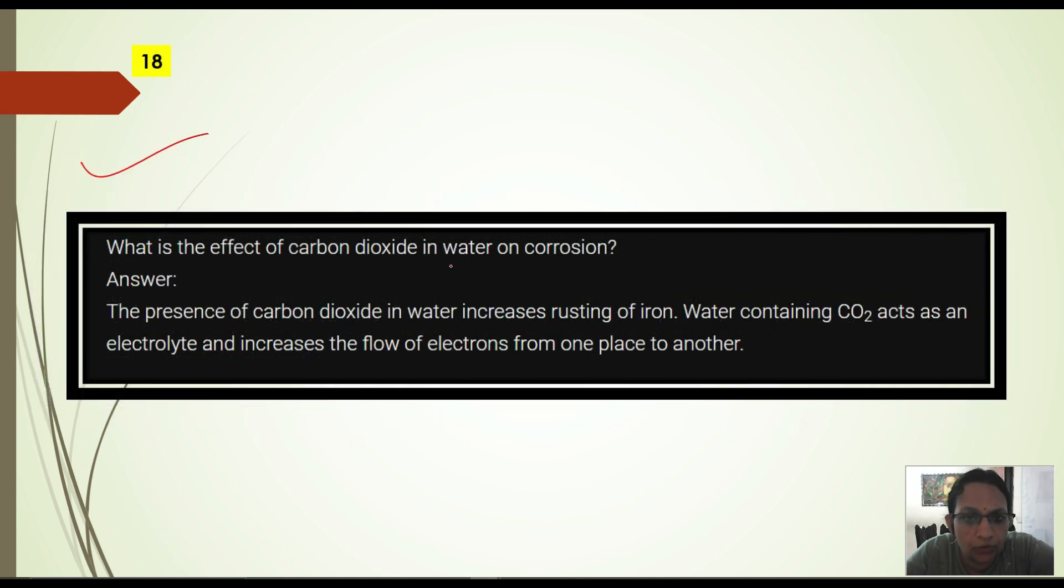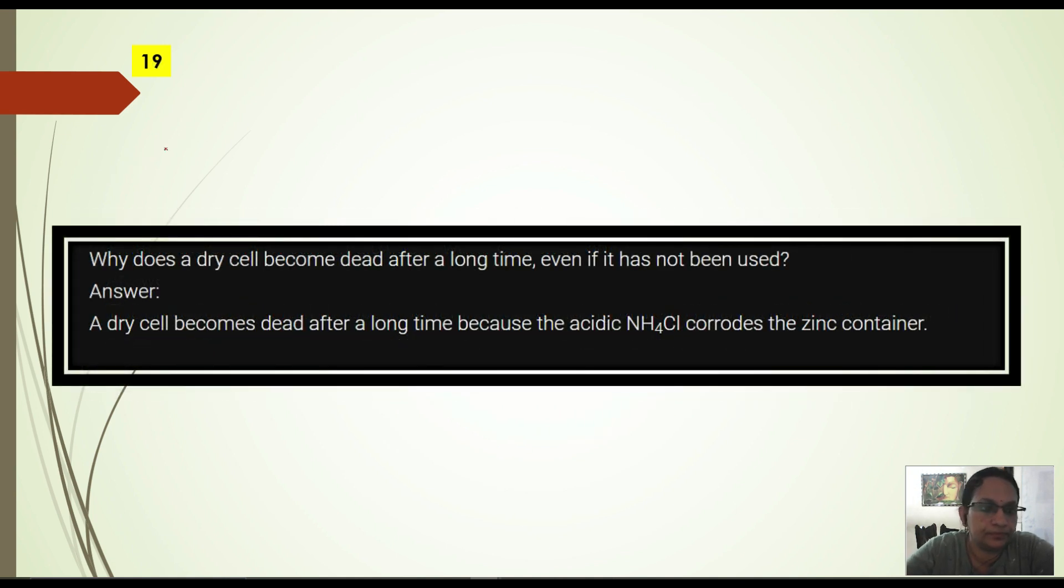Effect of CO2 in water on corrosion. Carbon dioxide which is present in water increases the rusting. Water containing CO2 acts as an electrolyte and increases the flow of electron from one place to another.